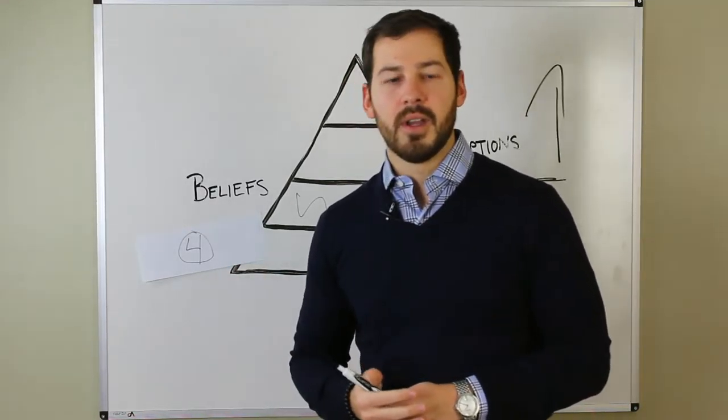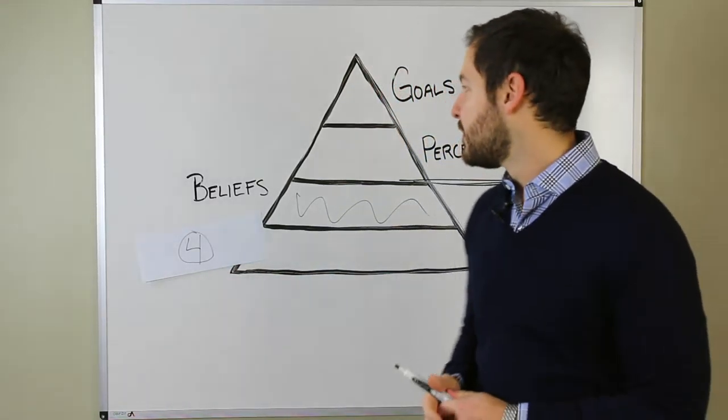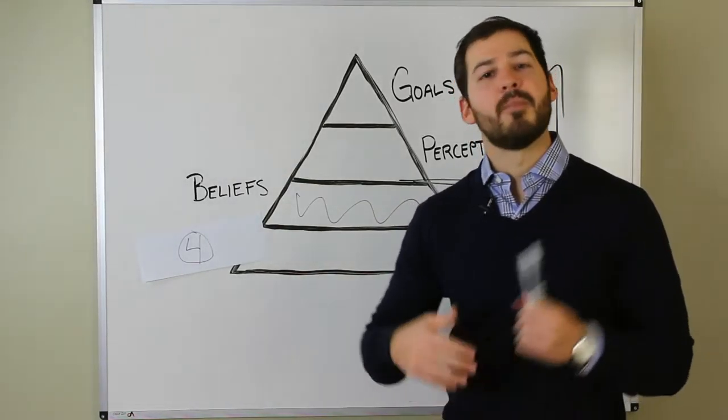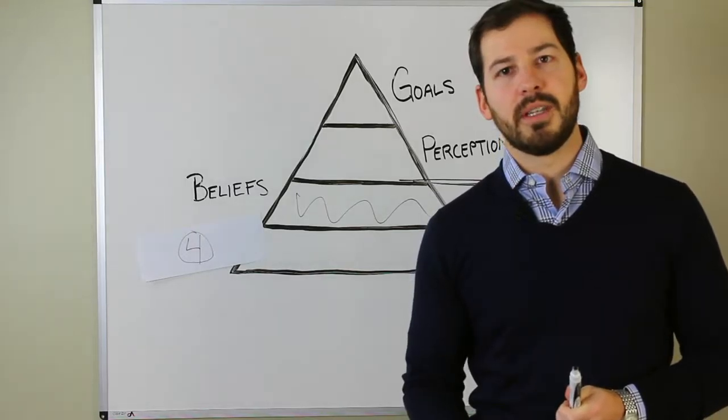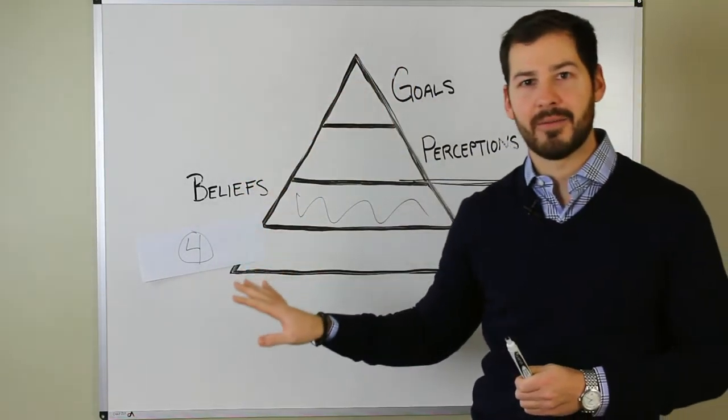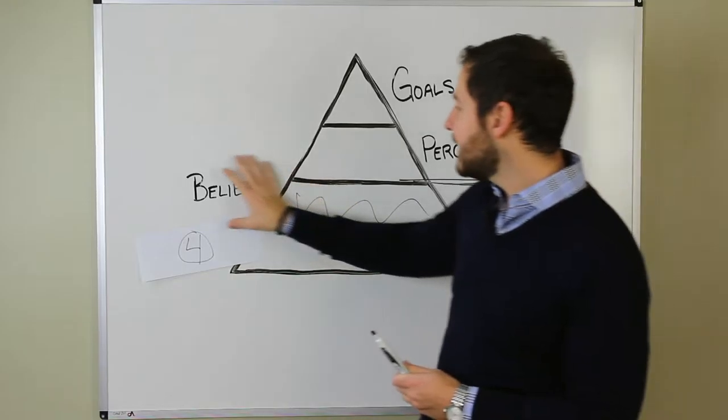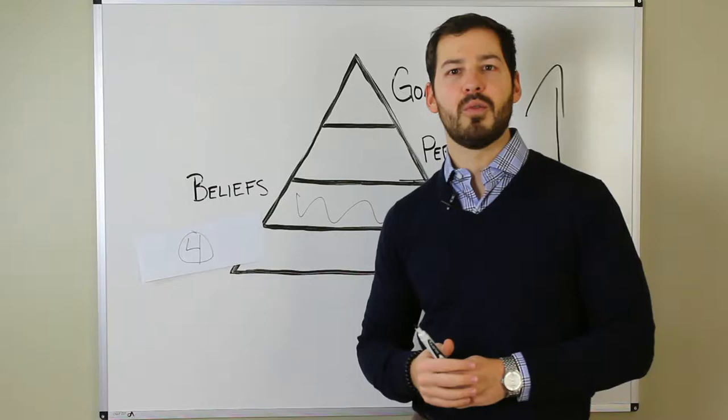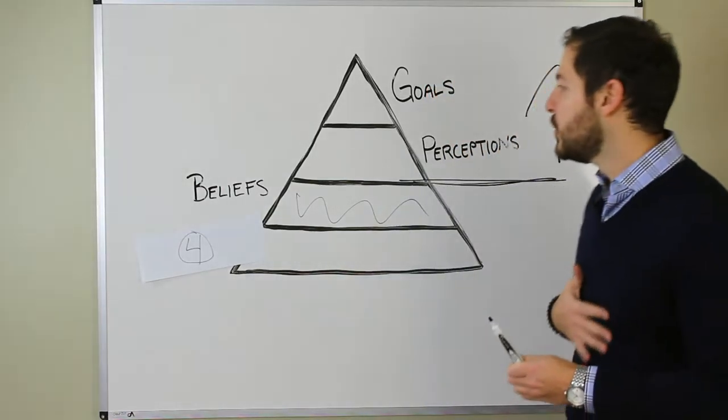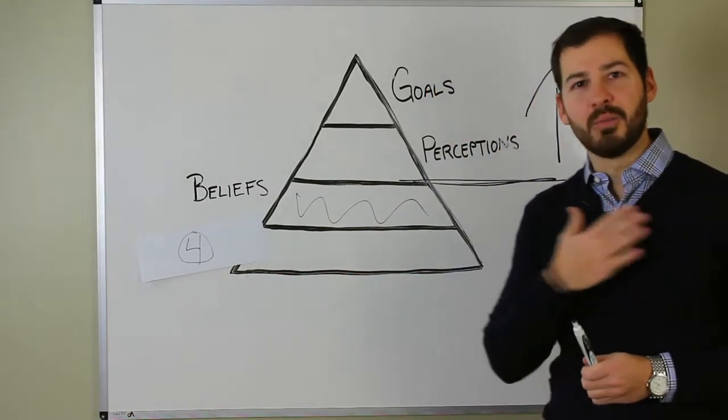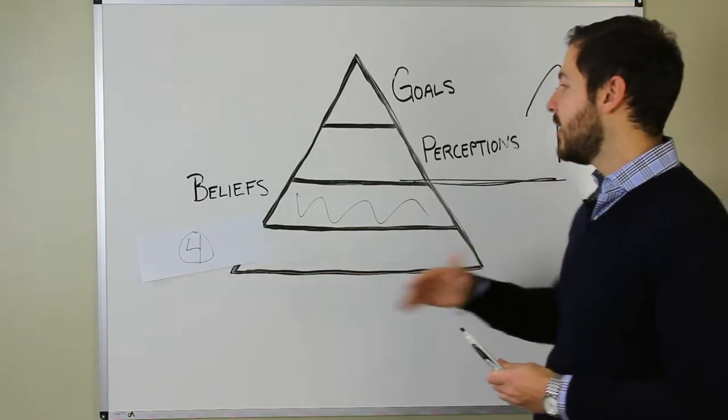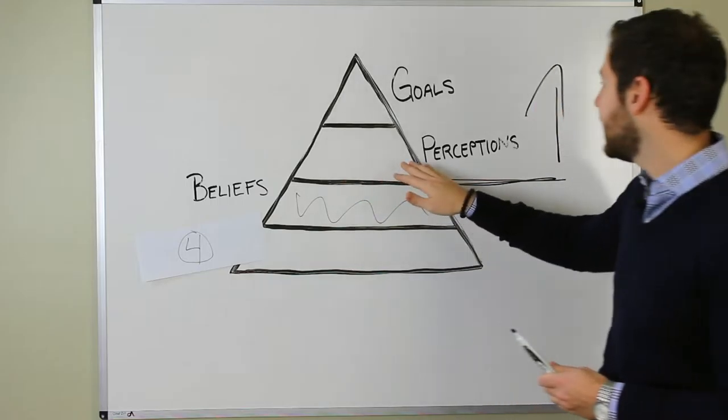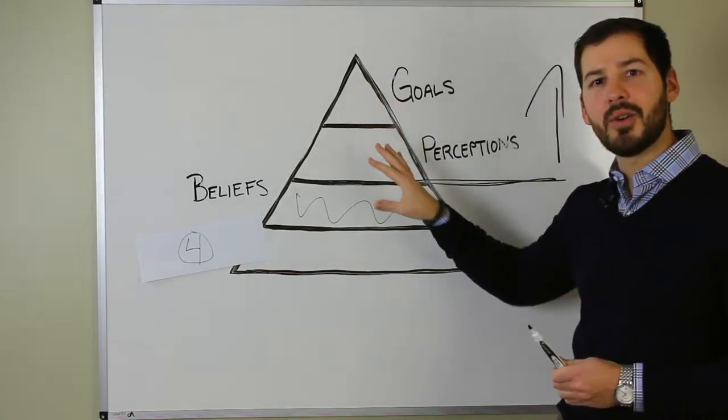But if someone believes that something happened to them in life, maybe they went through a divorce or a struggle and they believe that the reason that happened is in order for them to be stronger or I am a resilient person, having that kind of belief, it can set them up to achieve different things in life. If you explore what your root beliefs are, the way you perceive the world, what you believe about, you bring about. If you can get to the root of what your beliefs are, it's actually going to set us up that these things will start to kind of change automatically.